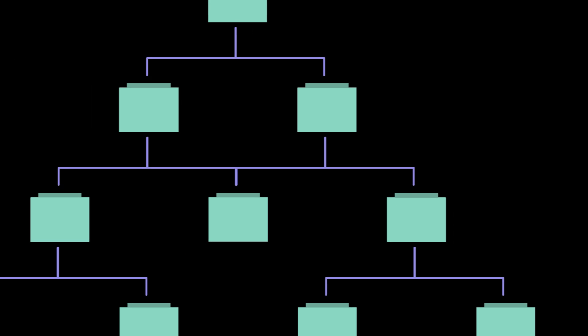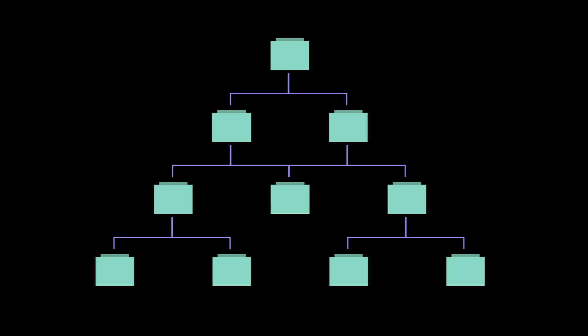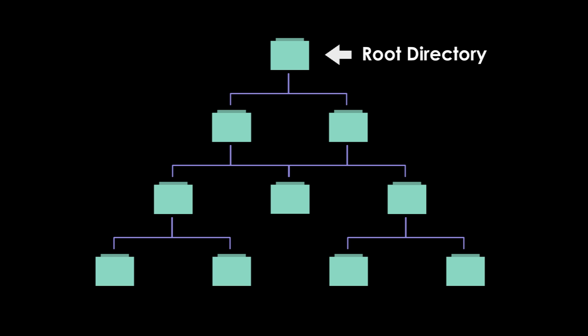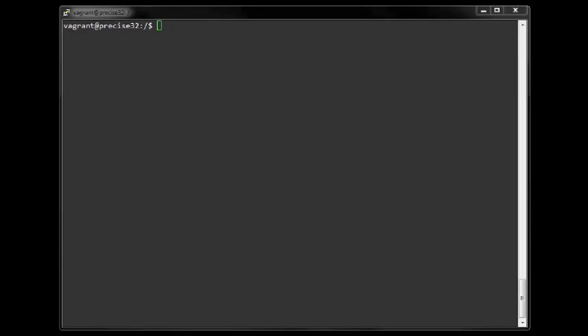Think of this file system hierarchy as an upside-down tree. At the top level is the root directory, where it branches out into its own sub-directories. If I want to change my present working directory to the root path, I can do cd slash. I am now in the root directory. I can list what is contained in that directory with the command ls, as seen in the previous video.